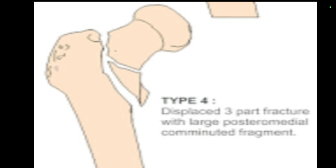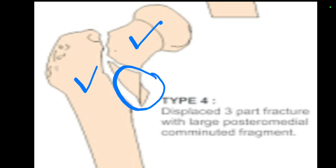Next is Type 4. In Type 4, we also have a three-part fracture — first, second, and third — involving the posteromedial combination or the lesser trochanter. Comparing Type 3 and Type 4: the difference is that Type 3 has a fracture of the greater trochanter, while Type 4 has a fracture of the lesser trochanter or the posteromedial combined fragment.